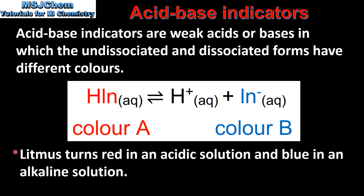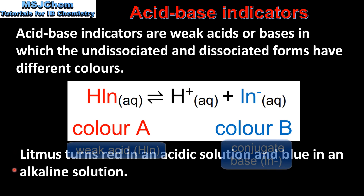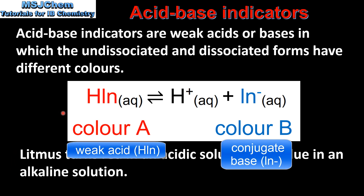Litmus is an indicator that turns red in an acidic solution and blue in an alkaline solution. As we can see from this equation, the undissociated form of litmus has a red color and the dissociated form of litmus has a blue color.